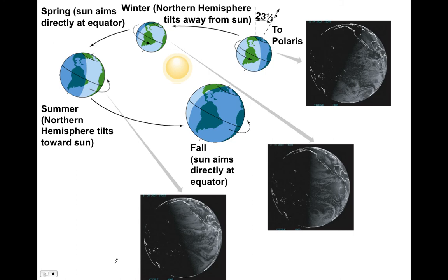Finally, we rotate into fall, where the transition from summer to winter begins. Like spring, Earth's rotational axis is not tilted toward or away from the sun, so we have equal heating in both hemispheres. The amount of energy per unit area absorbed in the northern hemisphere begins to decrease while it begins to increase in the southern hemisphere as we transition into winter. Solar heating is unequal with latitude and also changes throughout the year due to the tilt of Earth's rotational axis relative to the plane of the solar system.